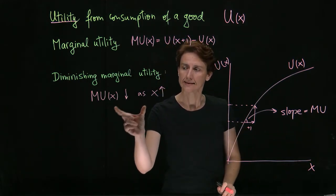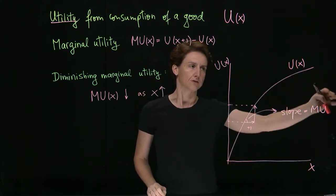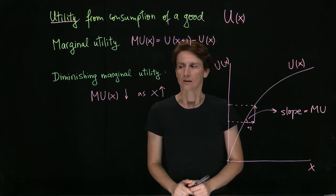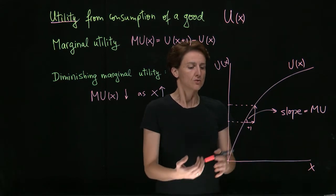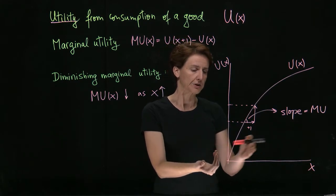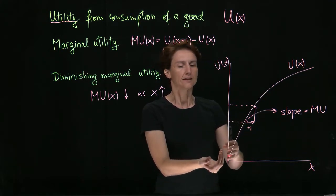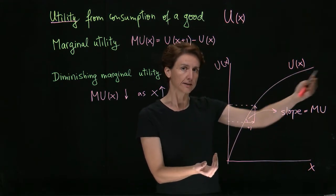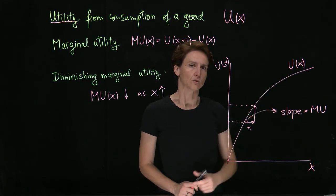It's important to note that it doesn't say that utility decreases as x increases. We're not saying that the function starts to dip down. We're saying that it will increase more slowly. Furthermore, this doesn't have to hold at all levels. So it's perfectly plausible to think that perhaps as you're developing a taste for a good, initially you like more units more and more. The law of diminishing marginal utility simply says that eventually, so past a certain quantity, your extra gains from consuming one more unit will start to decrease.